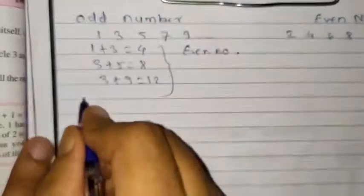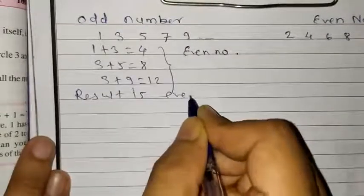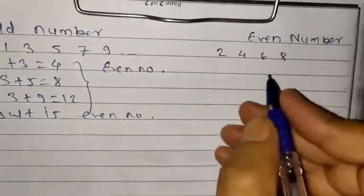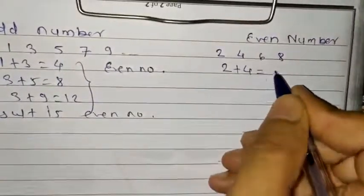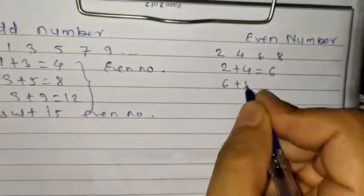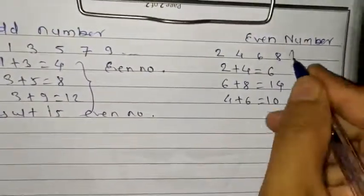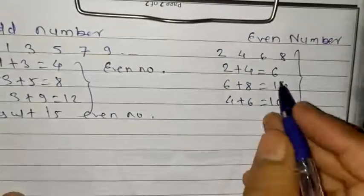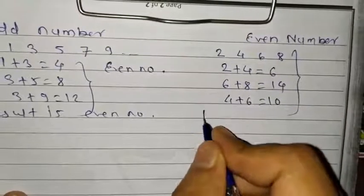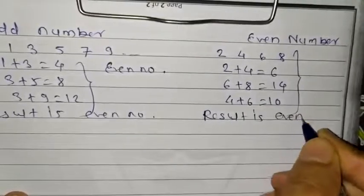So if you add any two odd numbers, the result is an even number. And what about even numbers? 2 plus 4 gives 6. If you do 6 plus 8, the answer is 14. 4 plus 6 equals 10. Now observe the results: 6, 14, and 10 — in each case we get an even number. So the result is even number.